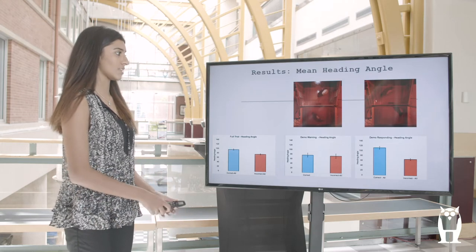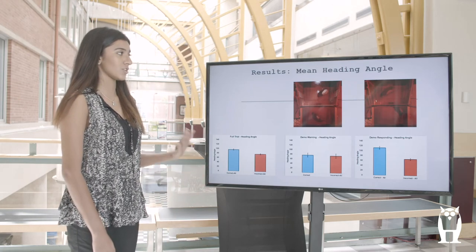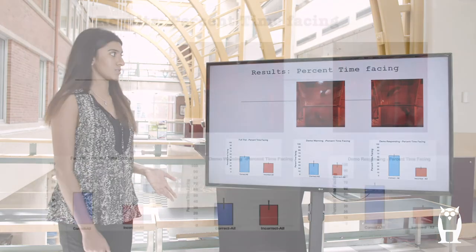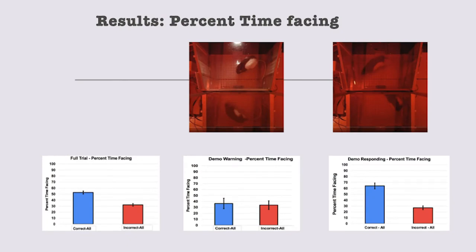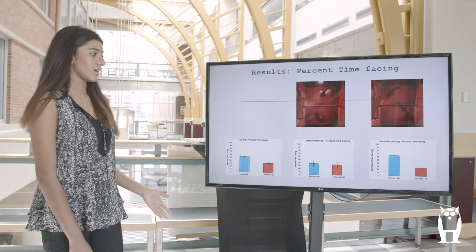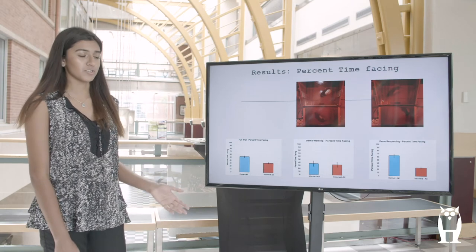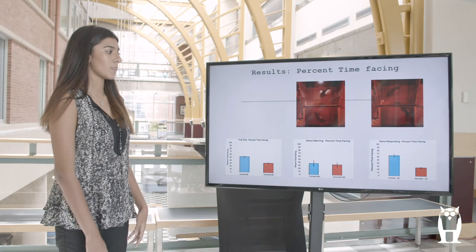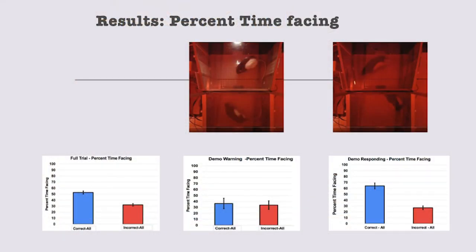This showed us that the nose poke light period was actually when the most learning was starting to occur. My second set of results was the variable of percentage of time facing. Throughout the entirety of the trial we found a higher percentage of time that the observer rat was looking at the demonstrator rat in correct trials versus incorrect trials. There was little to no difference before the demonstrator rat had started to respond, but in the last period there was a higher average percentage of time facing in correct trials versus incorrect trials, reiterating that this point of the trial was when the most learning was happening.